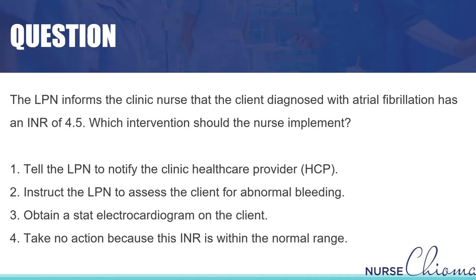So, option one: do we tell the physician? Option two: do we tell the LPN to check for abnormal bleeding, which the patient very well may have because the level is that high? Option three: do we grab a stat EKG to see if this is affecting their rhythm? And option four: we don't need to do anything because it's all within normal range.